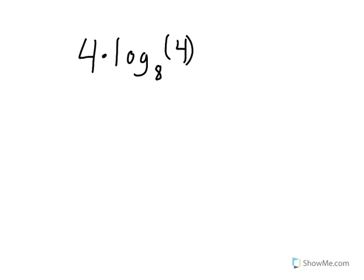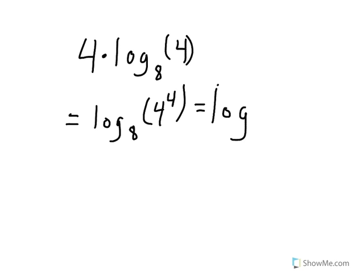In this example, we have 4 times log base 8 of 4. To condense this, we use the power property to get log base 8 of 4 to the 4th power. Note: 4 to the 4th power is 256 — I misspoke earlier — so we have log base 8 of 256.